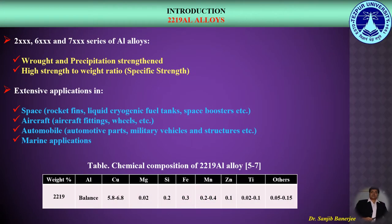2219 aluminum alloy is one of the 2000 series aluminum alloys which have extensive applications in space, aircraft, automobile, and marine industries. Here we can see the standard chemical composition of 2219 aluminum alloys.